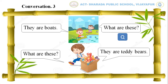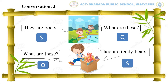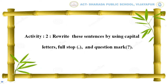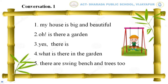Children, write Q for question and S for statement. Activity 2: Rewrite these sentences by using capital letters, full stop and question mark. Conversation 1: My house is big and beautiful. Oh, is there a garden? Yes, there is. What is there in the garden? There are swing, bench and trees too.